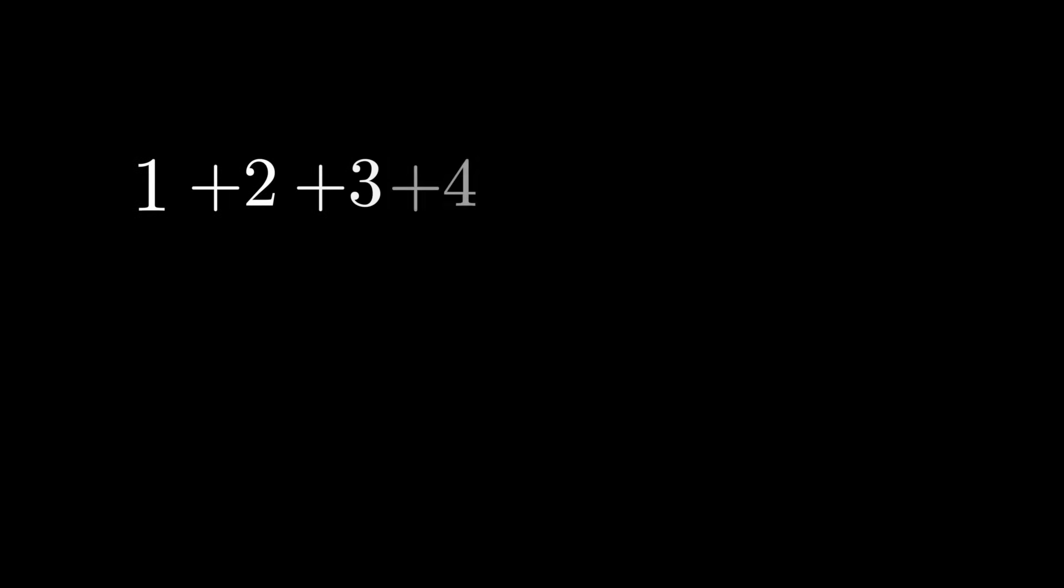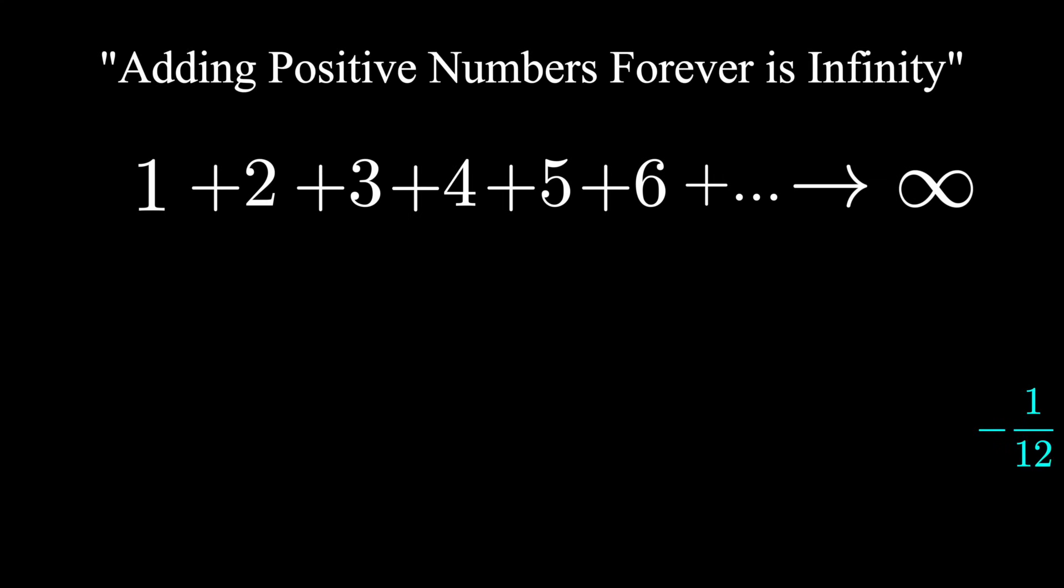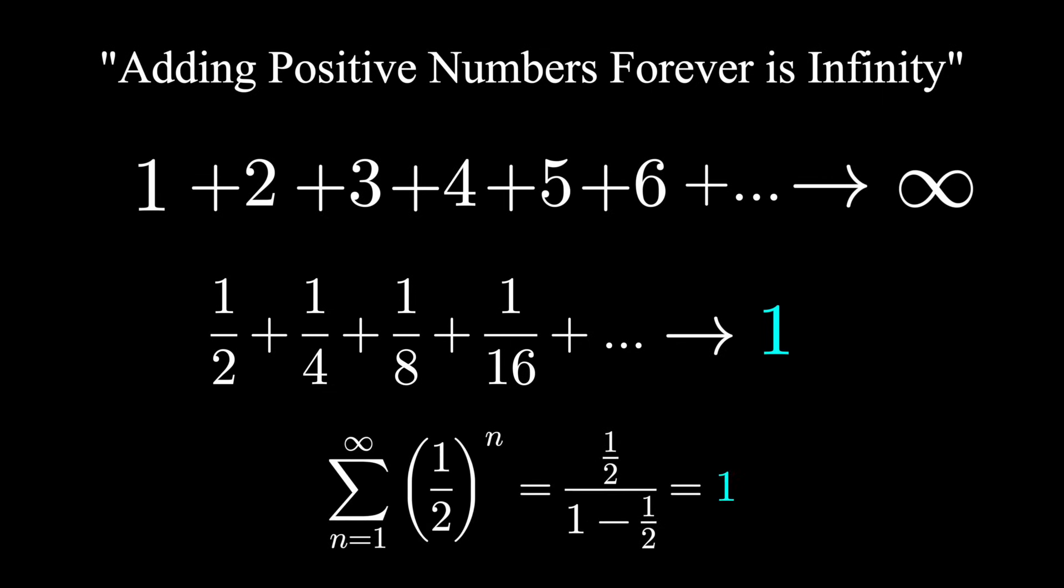Everyone knows if you keep adding a bunch of positive numbers forever, you'll go out to infinity. Except that's not actually true in every case. Calculus students learn about sums that look like this, known as convergent series. We're adding up infinitely many positive numbers, but they actually converge to a finite value. And this is just my first example on this frustrating list of mathematical theorems that seem obvious, but are actually false.